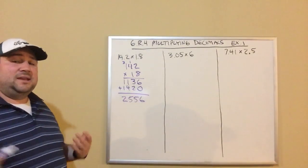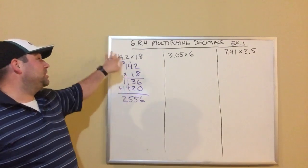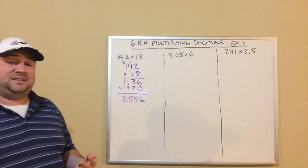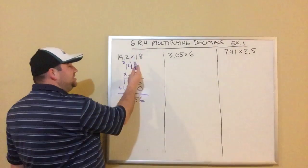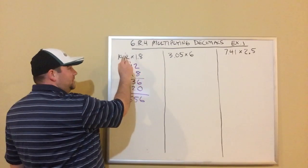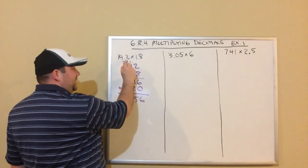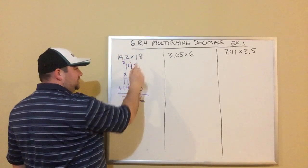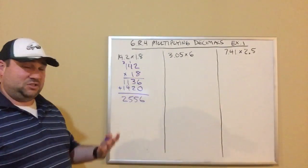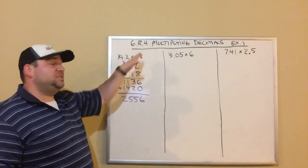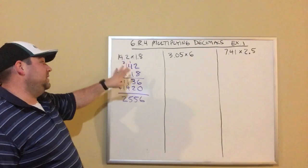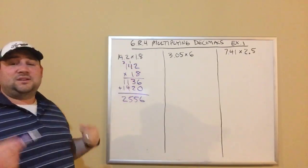Now the final step is I've got to figure out where my decimal point goes. To do that, you're going to go back to the original problem that had the decimal points and count the digits after the decimal points. 14.2 has one digit after, 1.8 has one digit. One digit plus one digit is two digits, so there's two digits after the decimal point in the original problem.